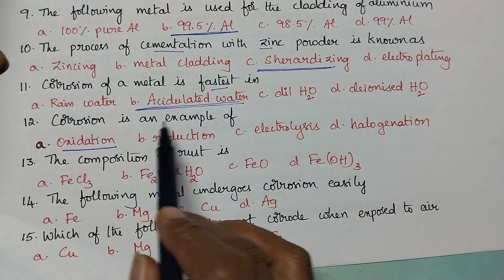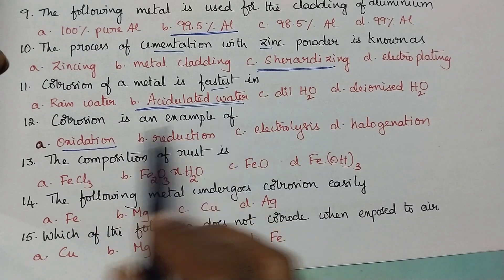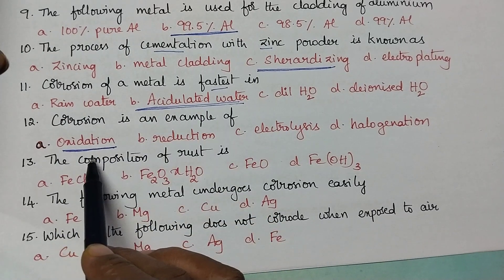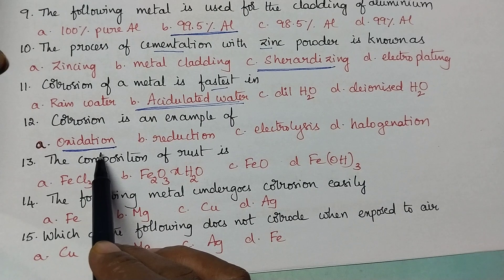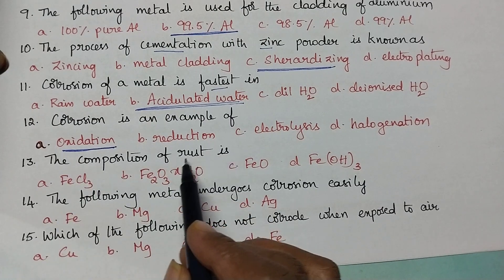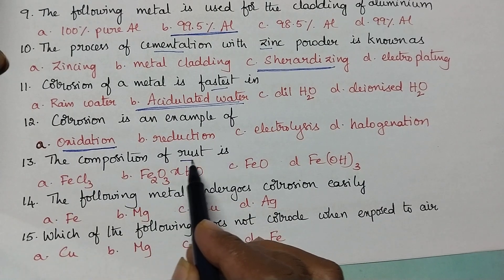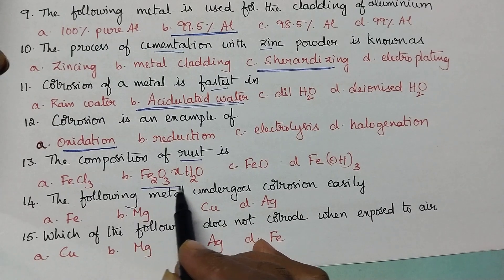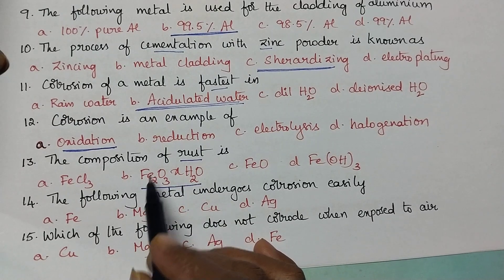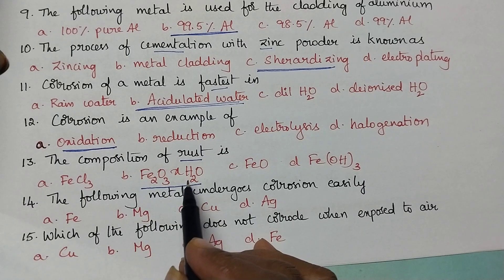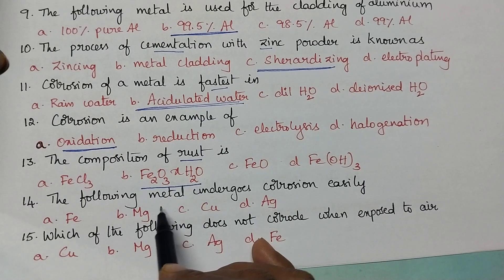Corrosion is an example of oxidation. The composition of rust is Fe₂O₃·xH₂O — rust is generally hydrated ferric oxide, so Fe₂O₃·xH₂O is the right option.